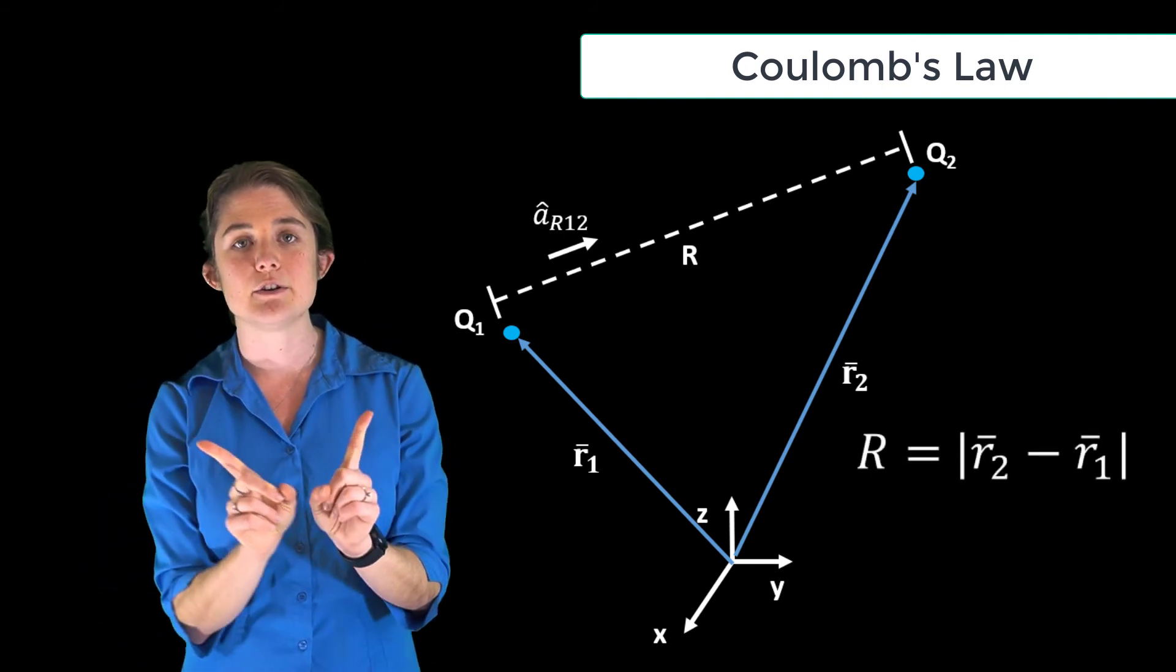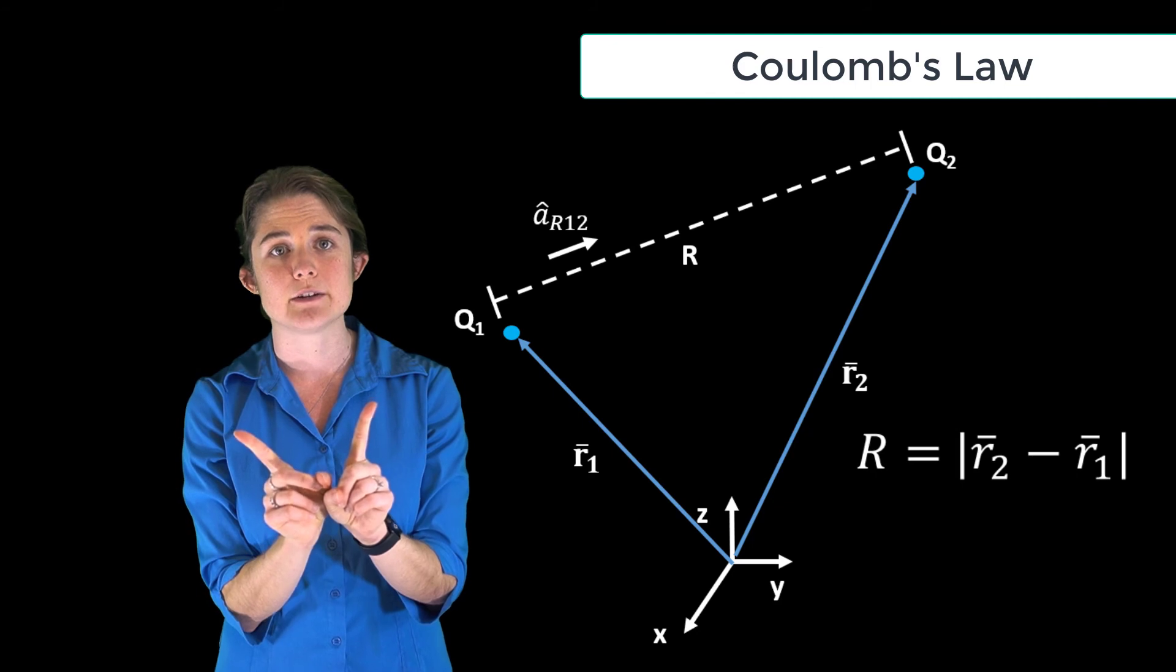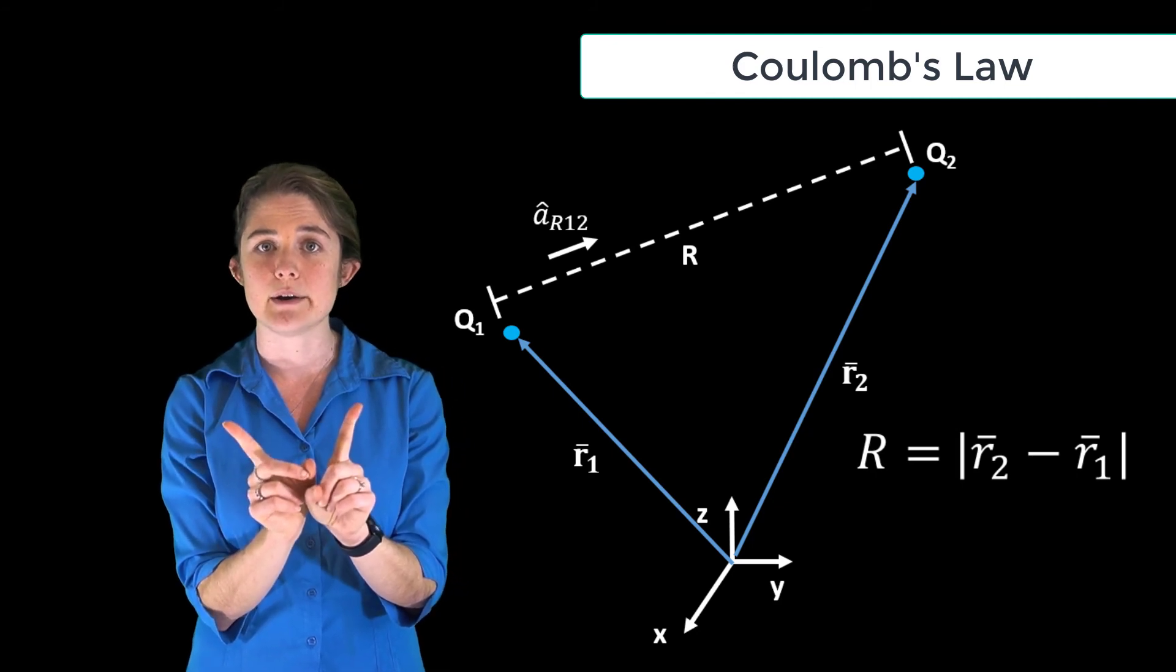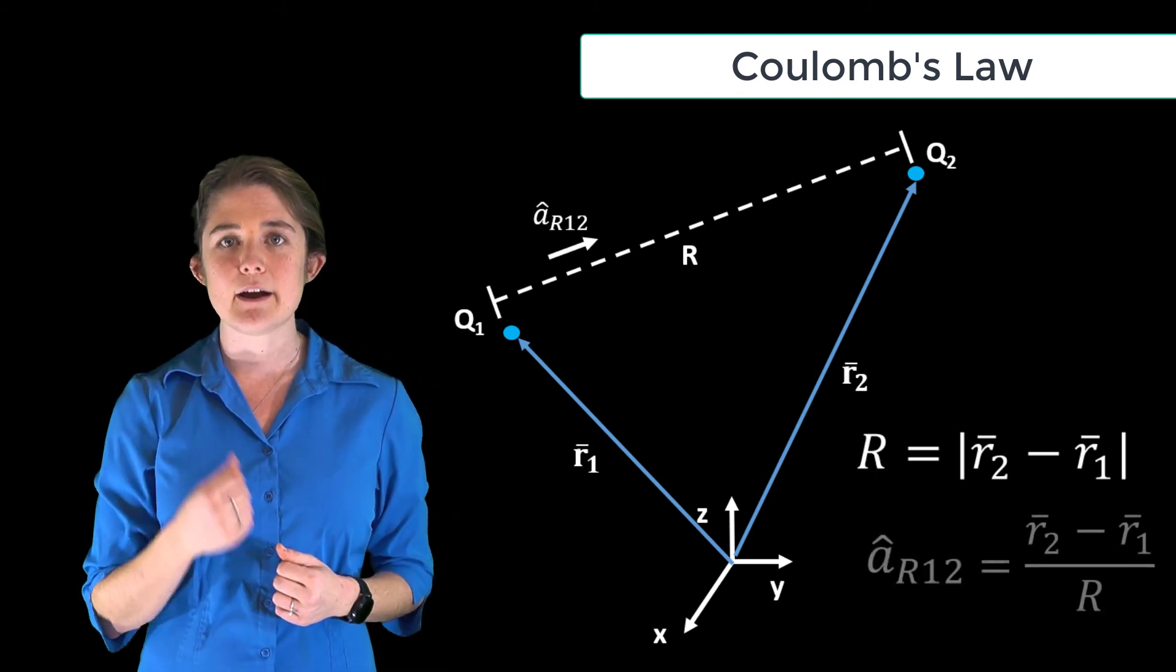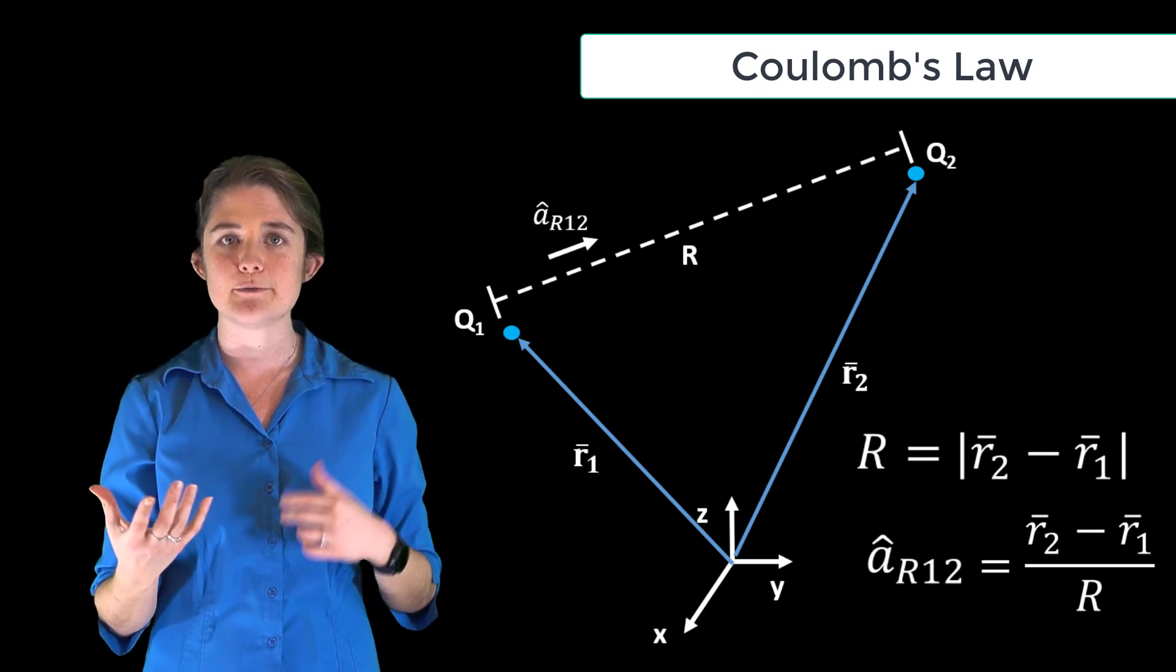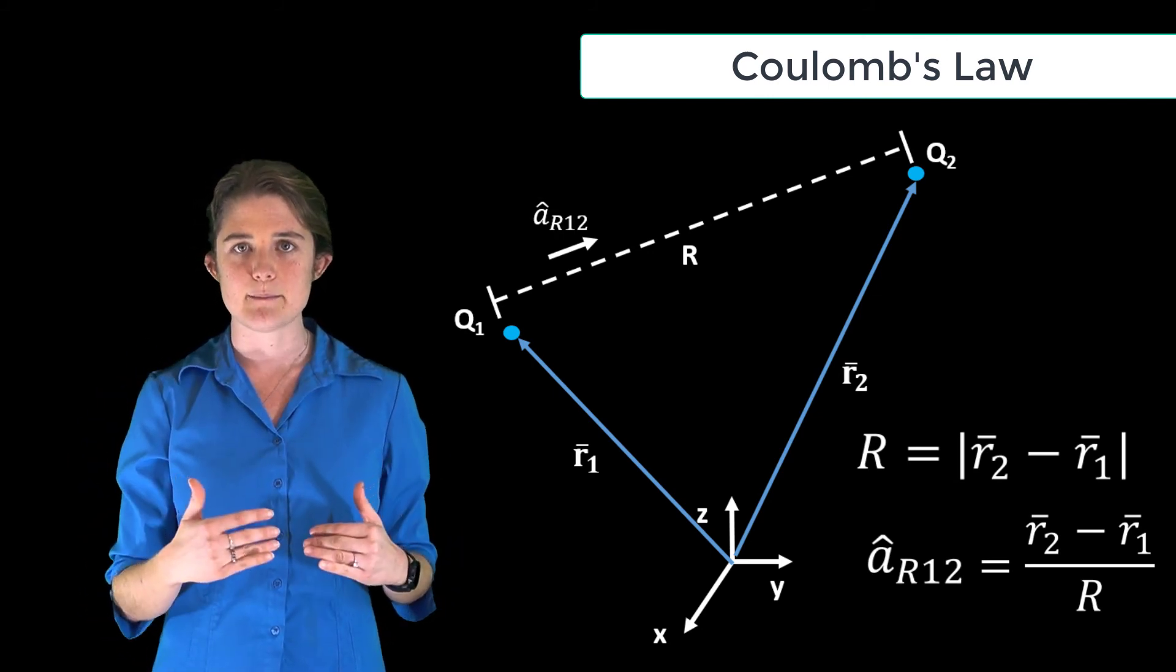The distance is the magnitude of the difference between those two vectors, r2 minus r1, and the unit vector ar12 is equal to r2 minus r1 divided by that magnitude R.